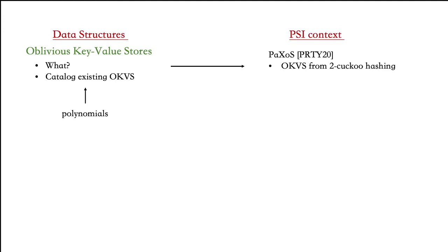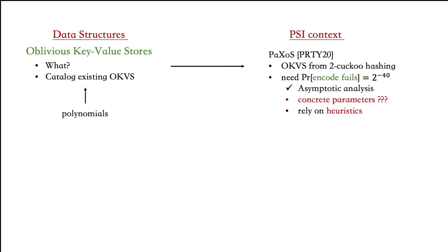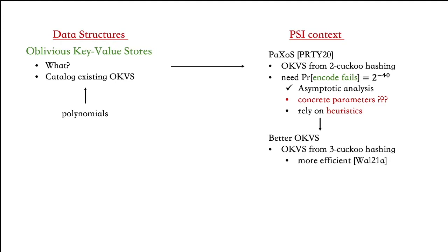Paxos is a binary OKVS that uses the analysis of cuckoo hashing with two hash functions. PSI protocols need cuckoo hashing to work except with negligible failure probability, something of the order 2⁻⁴⁰. The Paxos paper describes an asymptotic analysis of the cuckoo hashing parameters, but it remains non-trivial to translate them into concrete parameters needed to instantiate PSI in practice. They rely on heuristics to instantiate the PSI protocol.